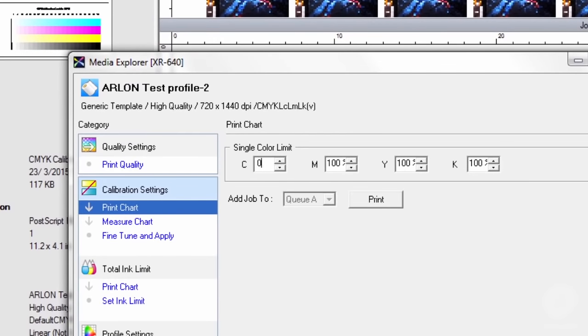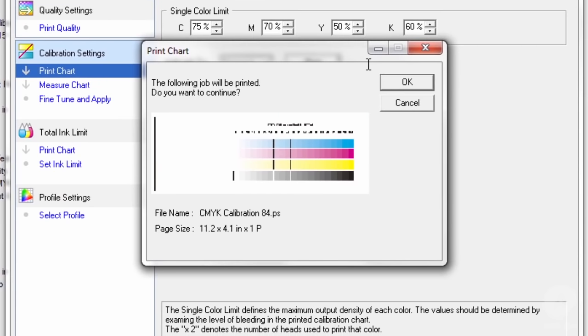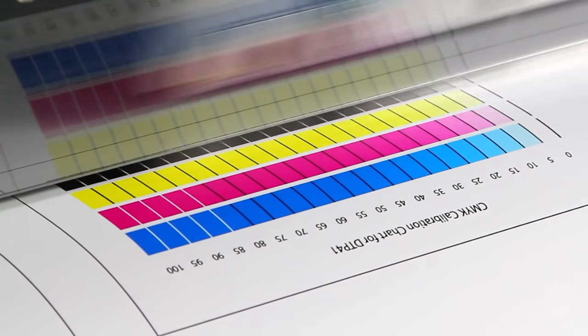In VersaWorks, enter the adjusted ink limit for each color. Click print to print a calibration chart with our adjusted ink limits to use on your measurement instrument.